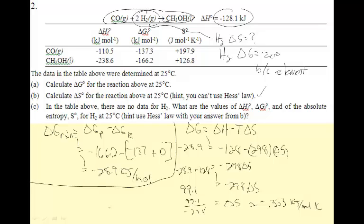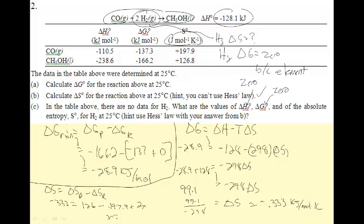In the table there are no data for H₂. The values for delta H and delta G of H₂ are zero because it's an element in its standard state. For the absolute entropy of H₂, I'll use Hess's law. Delta S equals delta S products minus delta S reactants. My delta S products are negative 333 joules per mole kelvin. So negative 333 equals 126 minus 197.9 plus 2x. Solving for x gives me negative 130 joules per mole kelvin.